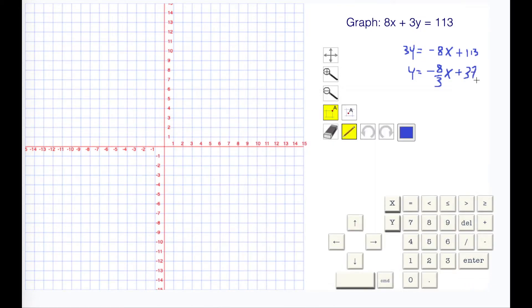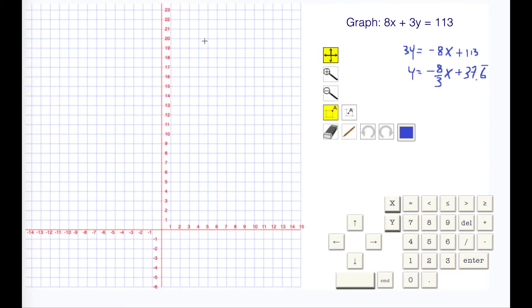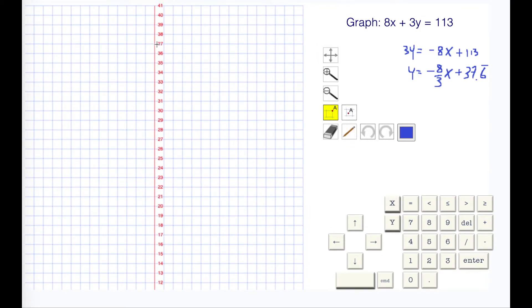37.6 repeating. Let's find that 37-ish. I'm just going to go to 37. I'm just going to translate that. So here's my 37, and the slope is negative 8 thirds. So I'm going to move over 3 and then down 8.